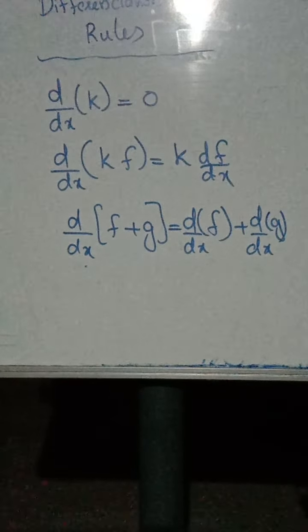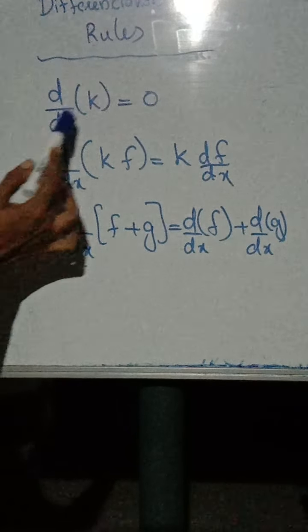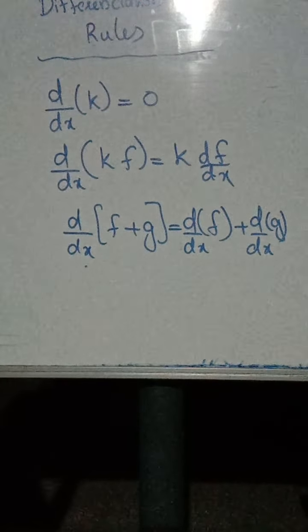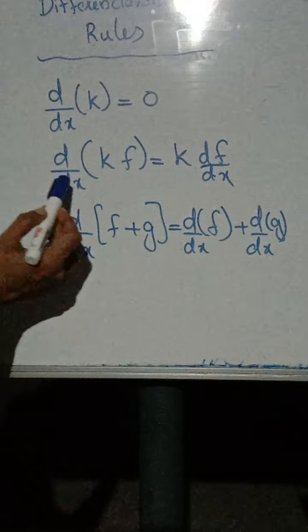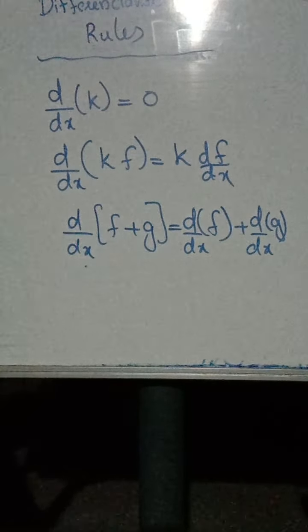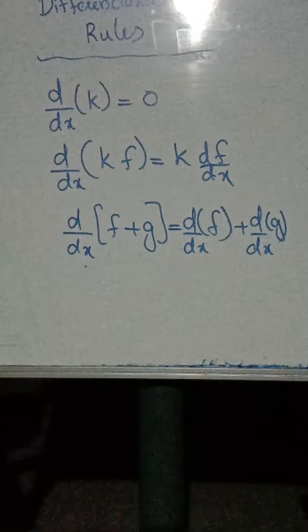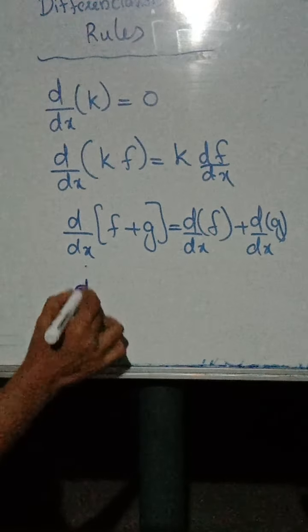Next, let's look at differentiation rules. The derivative of a constant is zero. The derivative of a constant into a function is equal to the constant into the derivative of the function.